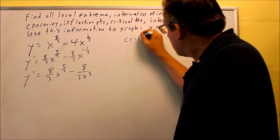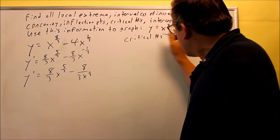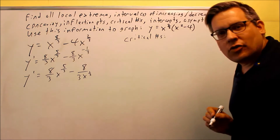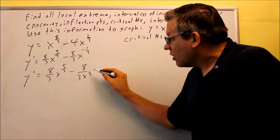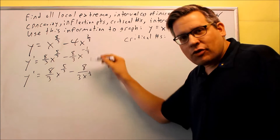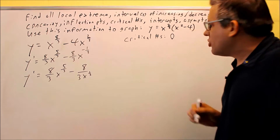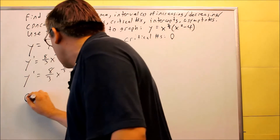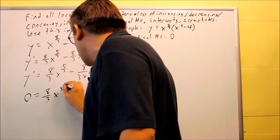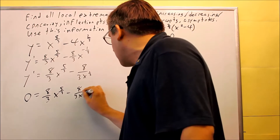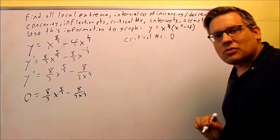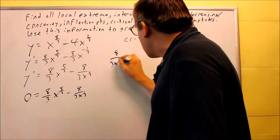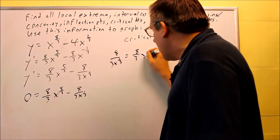Now we want to find our critical numbers. The first way is any place that the derivative is going to be undefined — you're going to get a critical number. We notice here that if we divide by 0 it's undefined, so x = 0 is going to be my first critical number. The second way is by setting the first derivative equal to 0 and solving. The best way to solve this is to bring one term over to the other side and then cross multiply, so 8 over 3x to the 1/3 equals 8 over 3x to the 5/3.